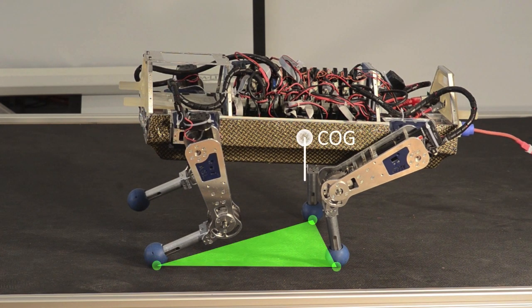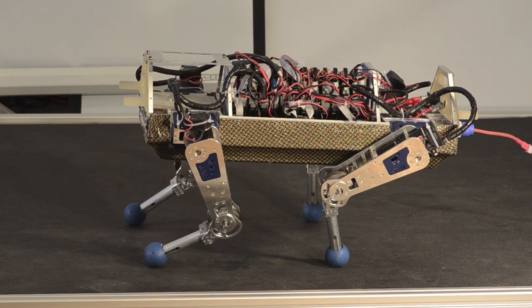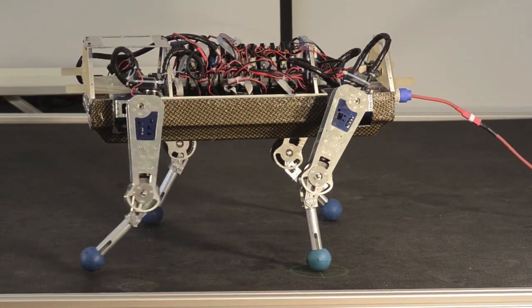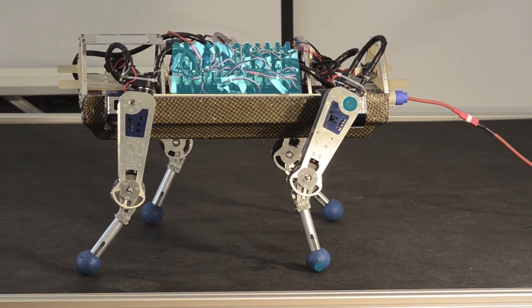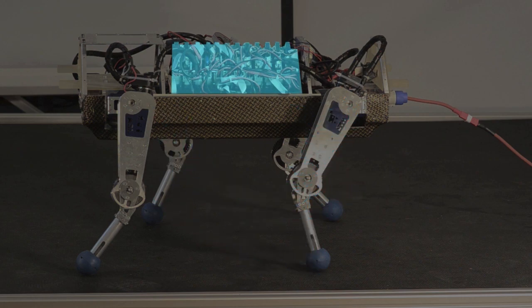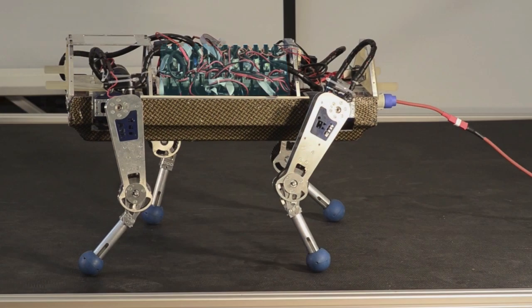Firstly, we have to keep the center of gravity over the support polygon to avoid falling or tipping over. Secondly, to ensure forward motion, the feet have to step ahead accordingly. The onboard computer calculates the desired joint position using inverse kinematic methods and sends them to the motor controllers several hundred times a second.